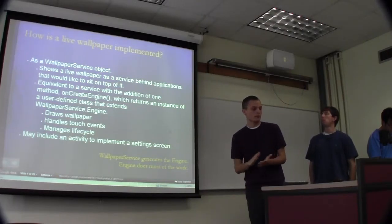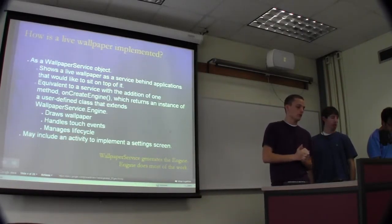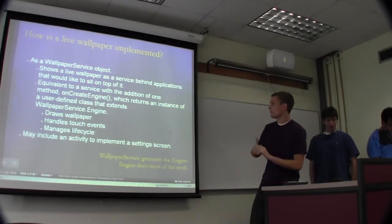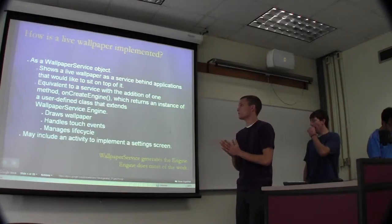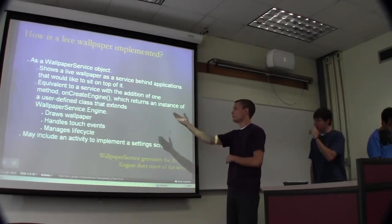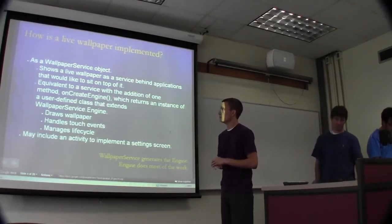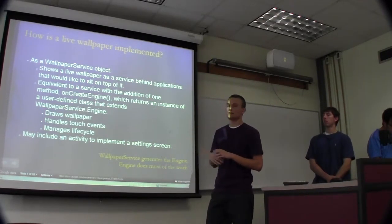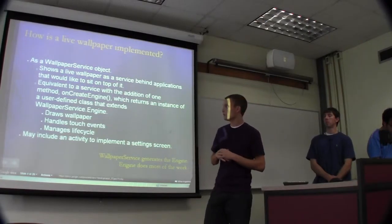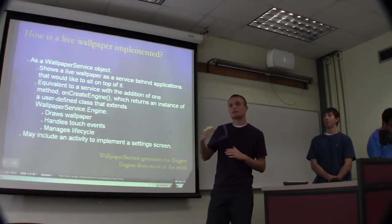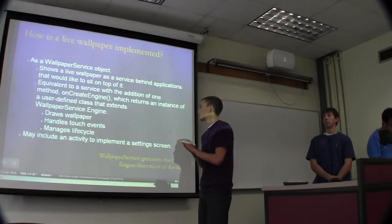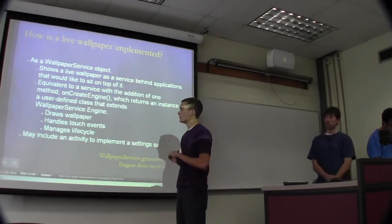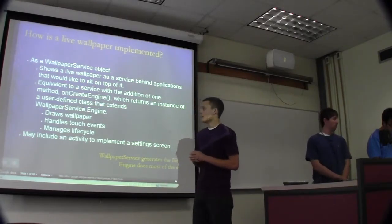So how's a live wallpaper implemented? A live wallpaper is pretty much a service with one extra method. So it's implemented as a wallpaper service object. Again, just a service with the on-create engine method implemented. This on-create engine method just returns an instance of a class that you have to define on your own that extends the engine class. So this engine is really the guts of the live wallpaper. It draws the wallpaper, handles all the touch events, manages the life cycle.